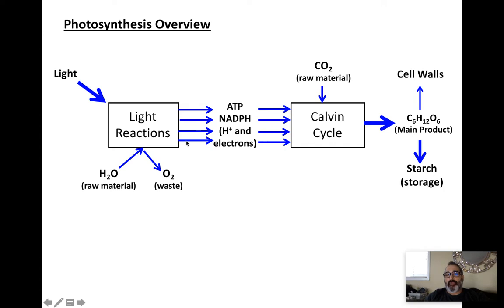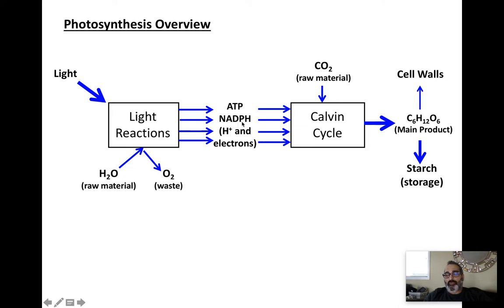Today we're going to focus on the light reactions — the 'photo' part. This is the part of photosynthesis that absorbs light, and that light gets eventually converted into a form of energy the plant can use. In the light reactions, water is broken down and oxygen gas is released as a waste product. Water loses its hydrogens and electrons, so water is oxidized and converted into oxygen gas. There are two major products of the light reactions: ATP and NADPH.